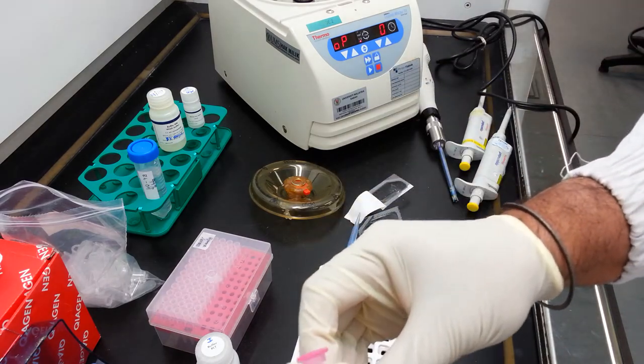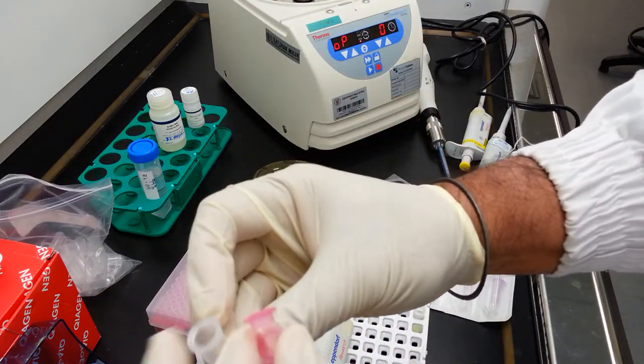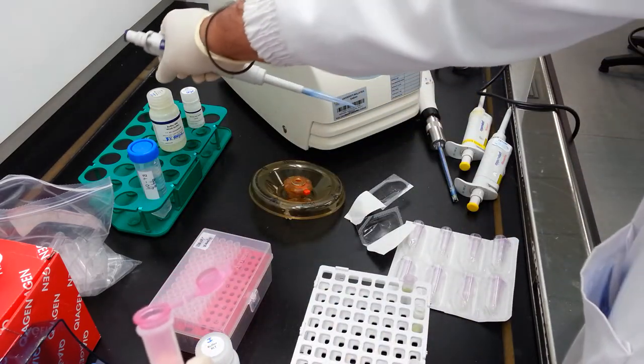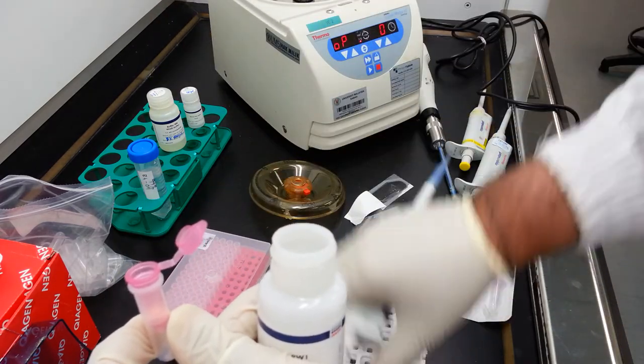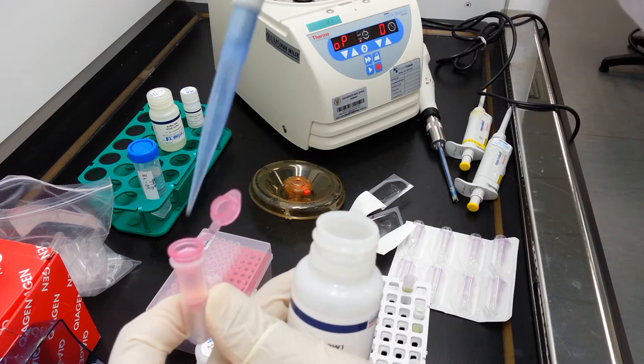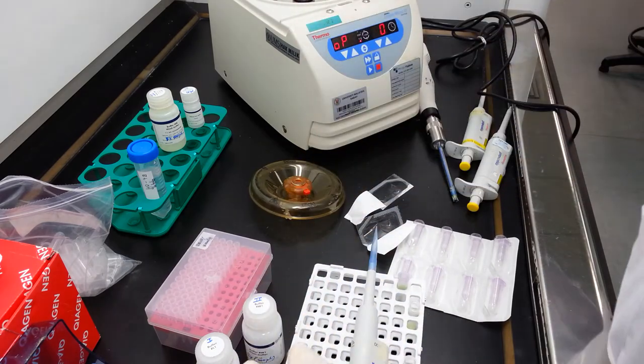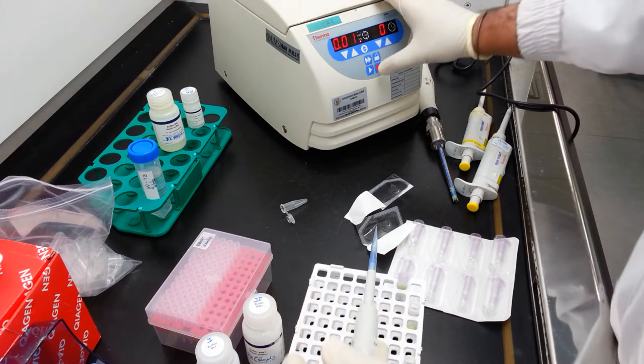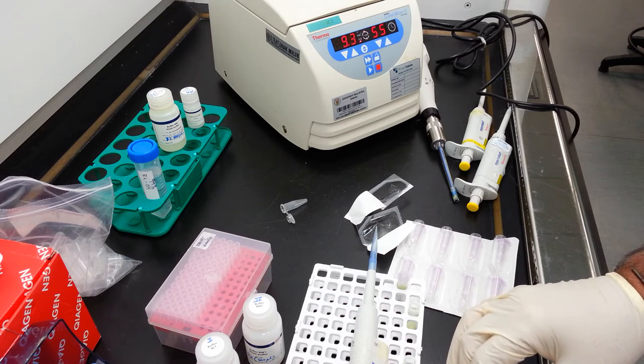Repeat this procedure one more time. Here you have a fresh collection tube. Insert the tube containing your RNA sample into the collection tube. Add 500 microliters of buffer RW1 into the upper section. Spin this again for 15 seconds at 13,000 G.